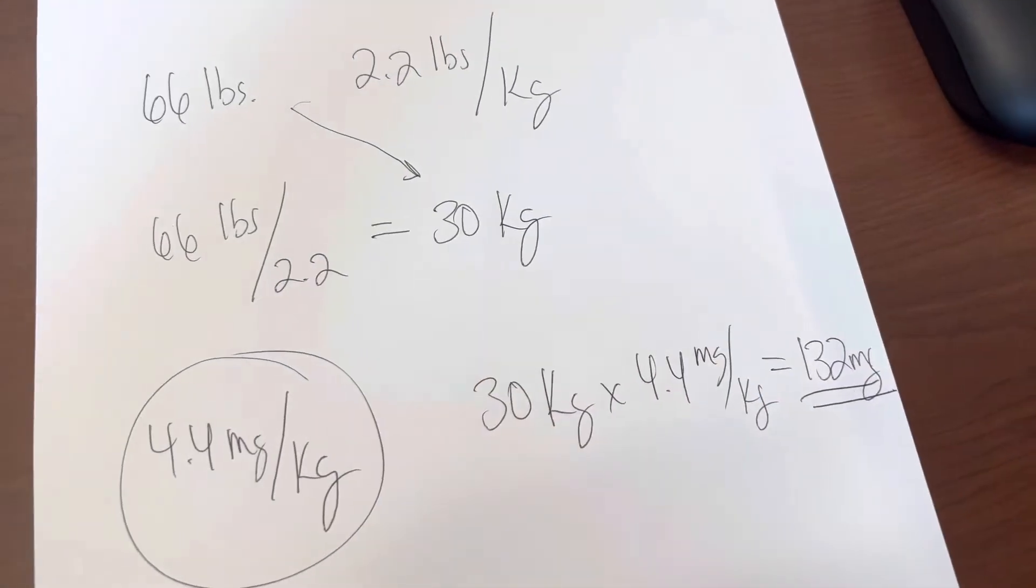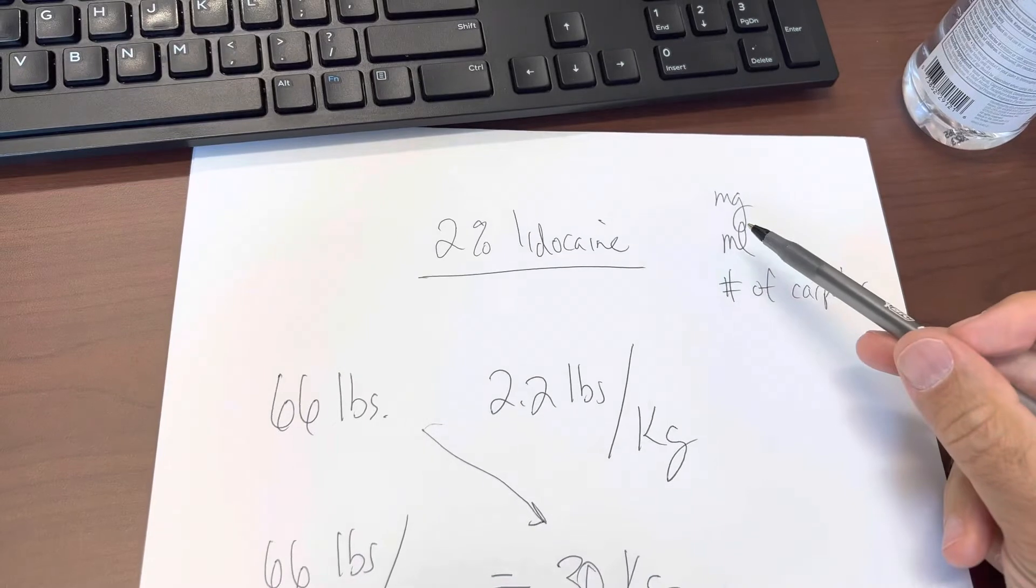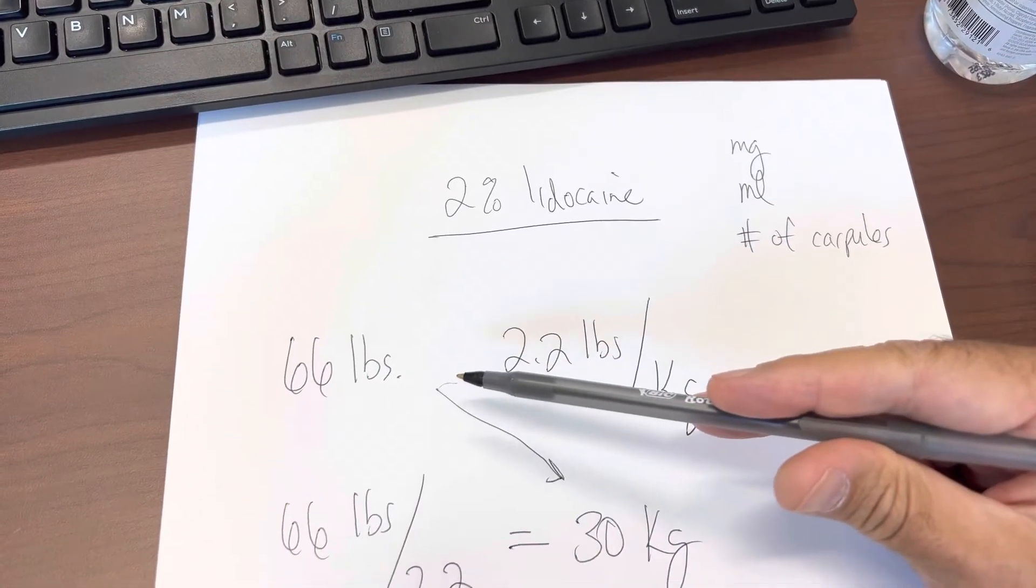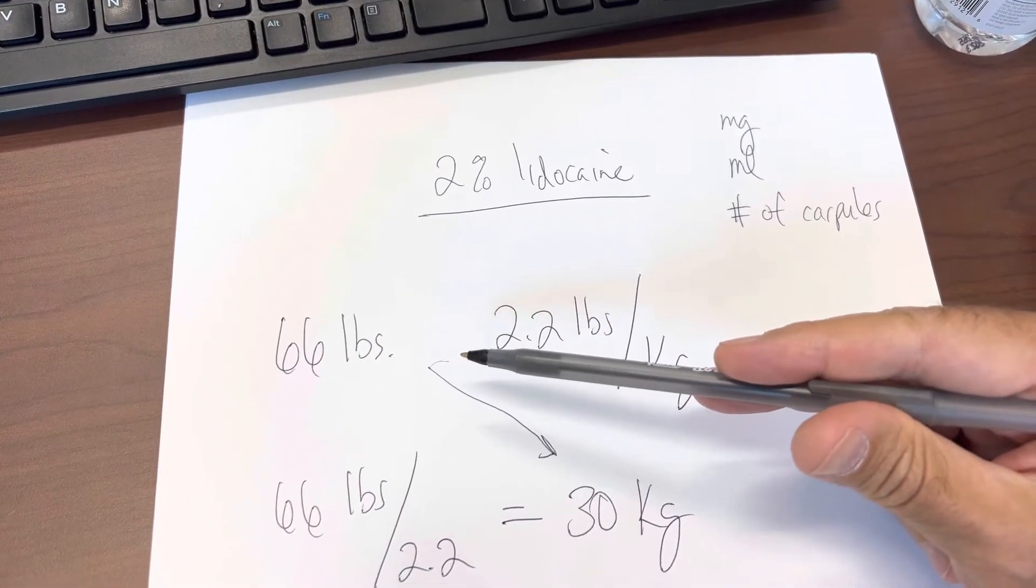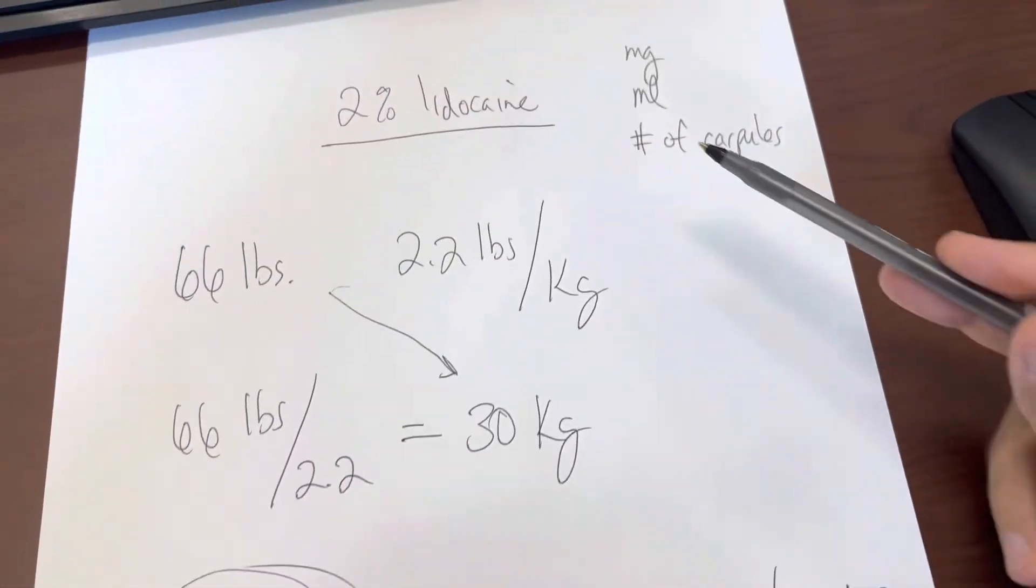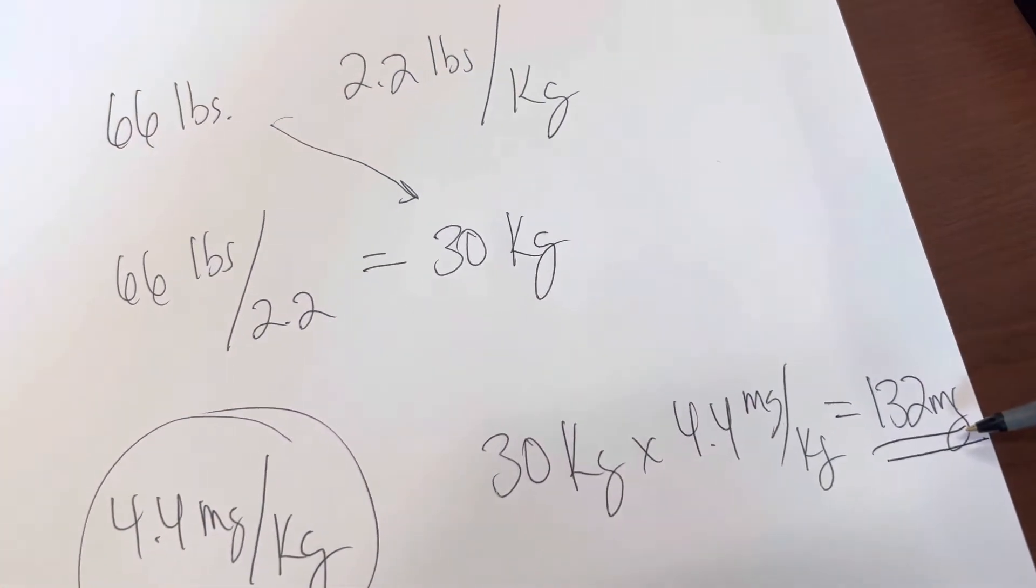And that's going to equal 132 milligrams. So that can be one of your answers right there. If they ask the question, for the 66 pound child, what's the maximum number of milligrams that we can give? Then we're going to say it's 132.